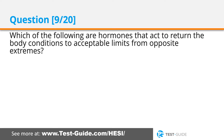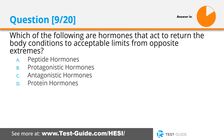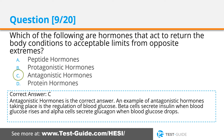Question nine: Which of the following are hormones that act to return the body conditions to acceptable limits from opposite extremes? Options: peptide hormones, protagonistic hormones, antagonistic hormones, protein hormones. Correct answer C. Antagonistic hormones is the correct answer. An example is the regulation of blood glucose: beta cells secrete insulin when blood glucose rises, and alpha cells secrete glucagon when blood glucose drops.